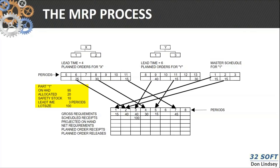Period 6 rounds out the gross requirements — that's the accumulation of service requirements from all parents into the time period for this item. Going through the netting process: we've got 95 on hand, minus 15 in period 1, minus an allocation of 20, giving us 60 projected available. At the end of period 1, projected available goes to 20. We've got a scheduled receipt of 100 in period 3 and a gross requirement of 40, making our projected available 80. That 80 follows into period 4, giving us 50 after requirements, then 35 at the end of period 5. In period 6, we have a negative 10 projected quantity on hand, so 90 units come in to cover it.